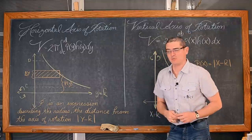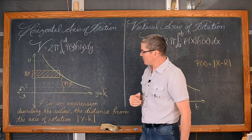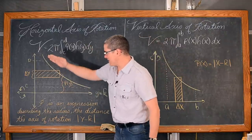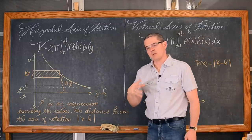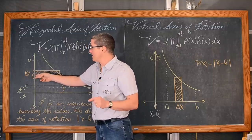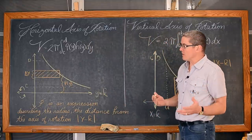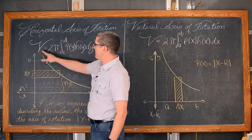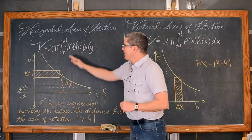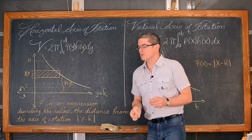If you have a horizontal axis of rotation, then using the shell method you are going to have horizontal representative rectangles, which we rotate around the axis of rotation to create those shells. That means we are going to be letting delta y approach zero — the thicknesses approach zero — so we are going to integrate with respect to y. The volume is equal to 2π times the definite integral from c to d of p(y) times h(y) dy.